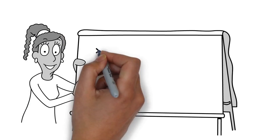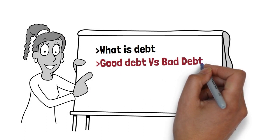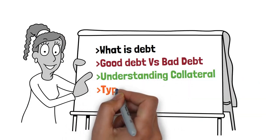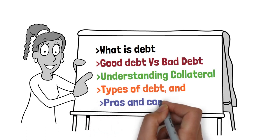Number one, what is debt? Number two, good debt versus bad debt. Number three, understanding collateral. Number four, types of debt. And number five, pros and cons of debt.